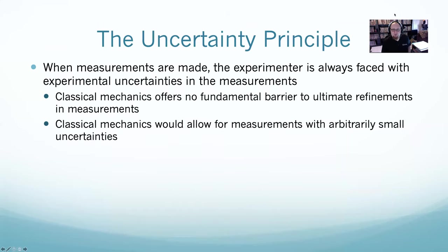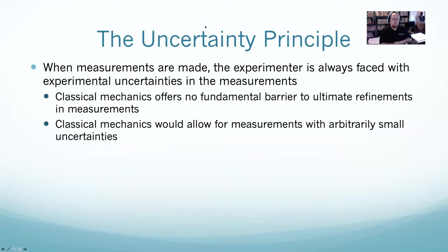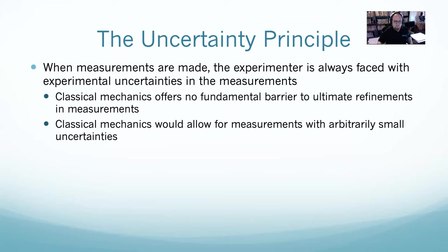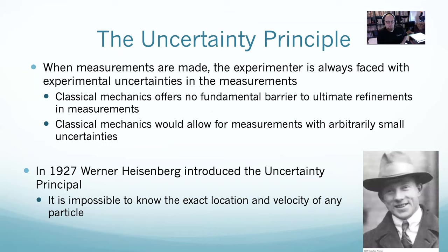The first person to really work this out was Werner Heisenberg. When you make a measurement, you always have a certain amount of uncertainty. In classical physics there are no limits to measurement precision. But in 1927, Heisenberg introduced the uncertainty principle: it is impossible to know the exact location and velocity of any particle. There are two major parts — the logical part and the mathematical part.